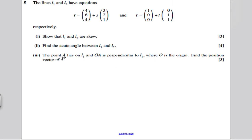And lastly, the point A lies on the line L1. OA is perpendicular to the line L1, where O is the origin. Find the position vector of A. Well, A lies on the line L1, so A has a position vector, OA has position vector 4 plus 3S, 6 plus 2S, and 4 plus S for some value of S that we don't know.